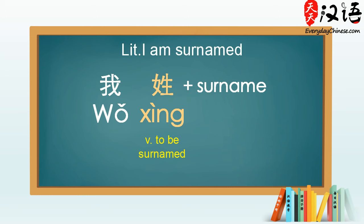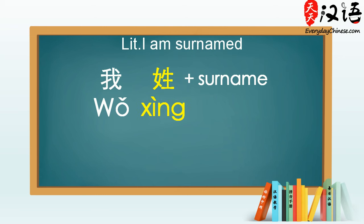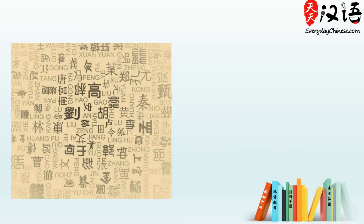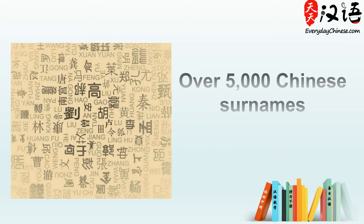So, 我姓 literally means 'I am surnamed'. For example, my surname is 王, so I will say 我姓王. There are over 5,000 surnames in Chinese.